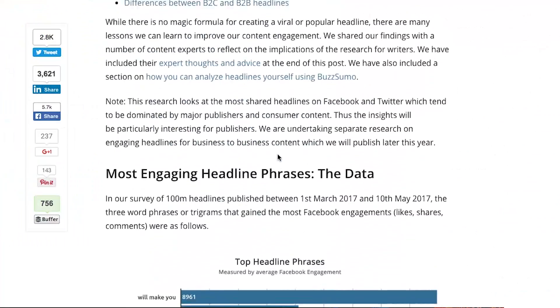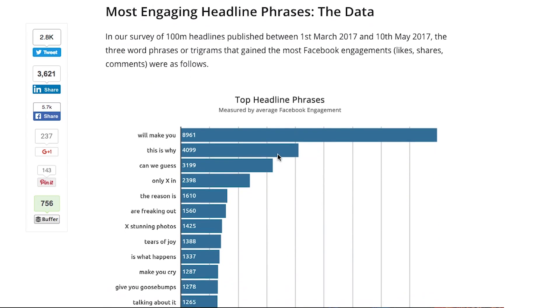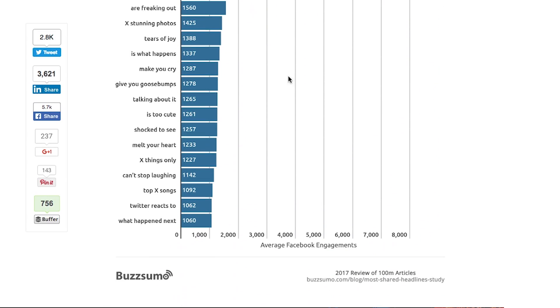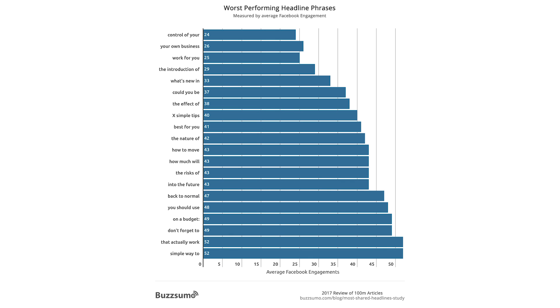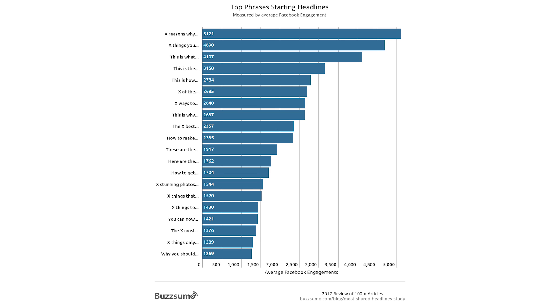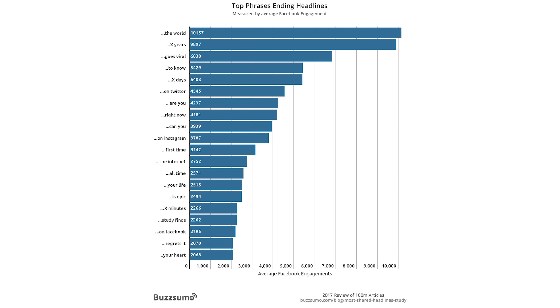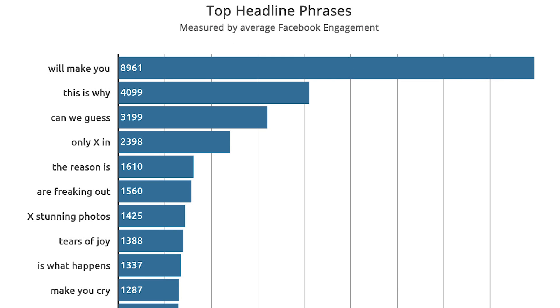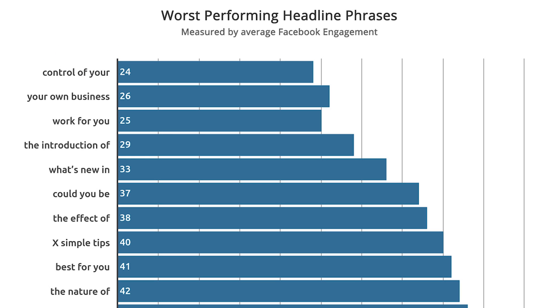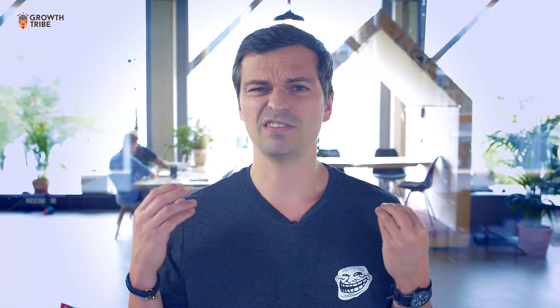Now onto some recent content marketing gold from Noah Kagan. Noah Kagan's team studied 1 million subject lines to give us a breakdown on what works and what doesn't. You've got top headline phrases that work really well on Facebook, the worst headline phrases that don't work on Facebook, some top phrases starting headlines, and some top phrases ending headlines. For example, you should start your headlines with 'will make you' or 'this is why', and you should never use phrases like 'control of your' or 'your own business' or 'work for you'. It's even got a really fun analysis of which specific numbers you should use inside headlines.